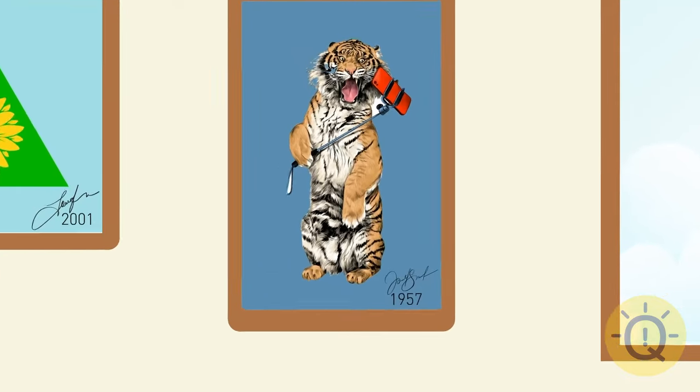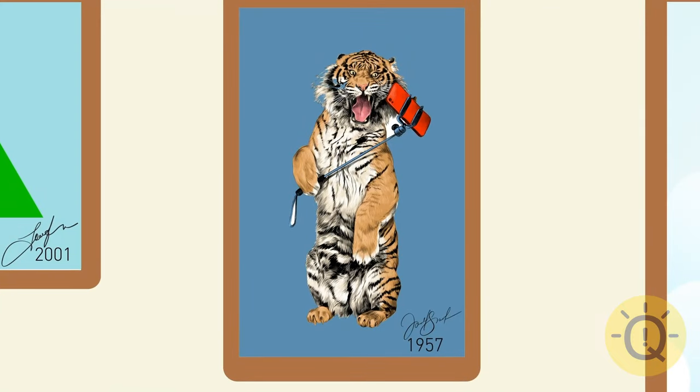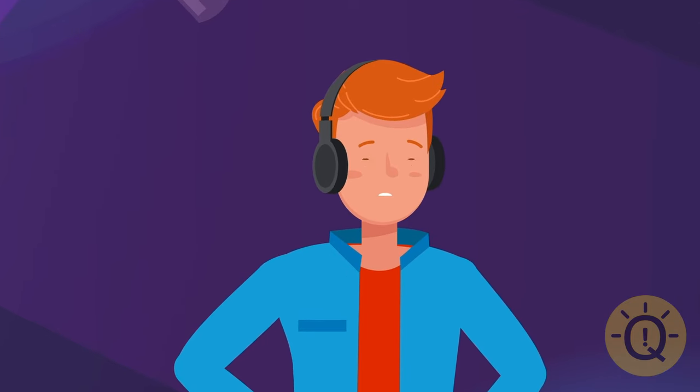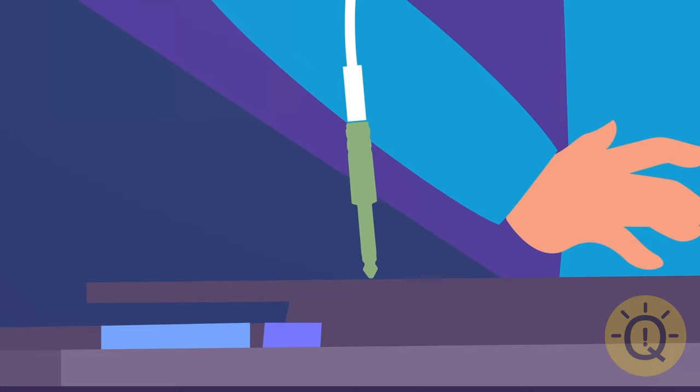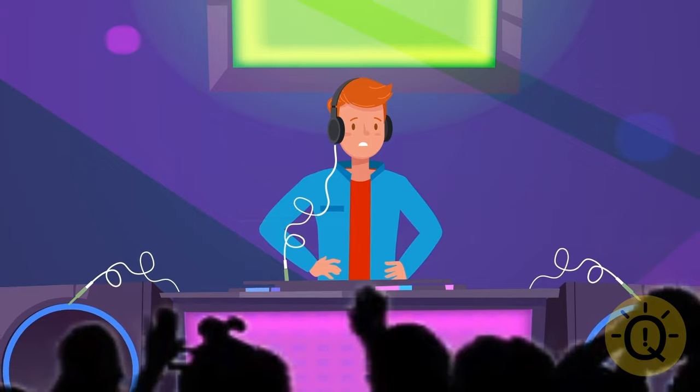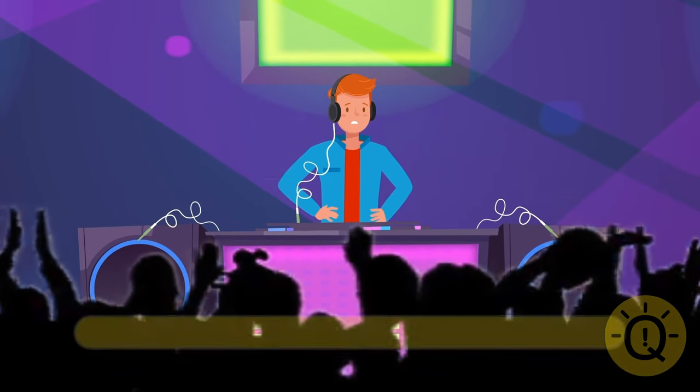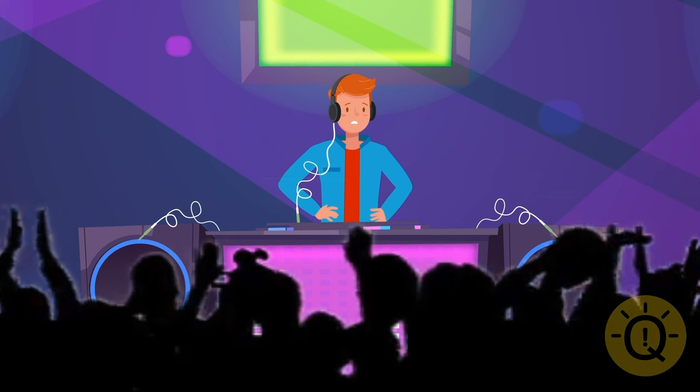Martin's nervous because today is his first DJ performance at an electronic music festival. He goes on the stage. The crowd is cheering. Martin puts his headphones on and turns on the first track. Music is playing but people aren't dancing. Why? The music is only playing in the DJ's headphones. Martin hasn't connected the wire to the speakers.